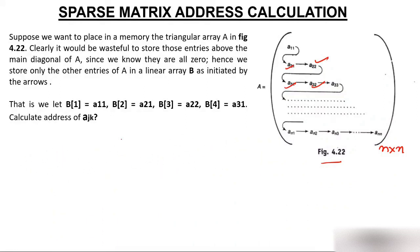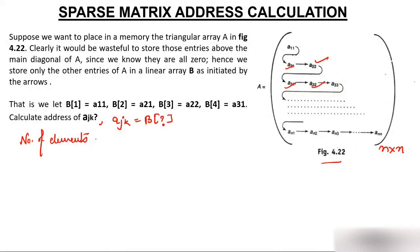The question is: at which index will A(J,K) fall in array B? So let's start by creating a formula. We consider the number of elements above row J of A(J,K). I'm saying: the number of elements above row J will be 1 + 2 + 3 + ... + (J−1).